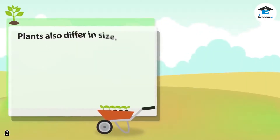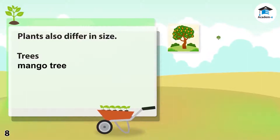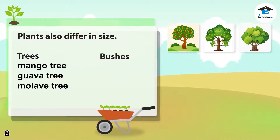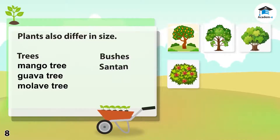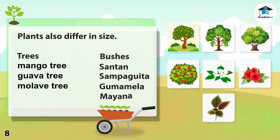Plants also differ in size. Some grow to be tall trees — examples are mango tree, guava tree, and mulberry tree — while some remain as bushes or small plants. Examples are centén, sampaguita, gumamela, and mayana.